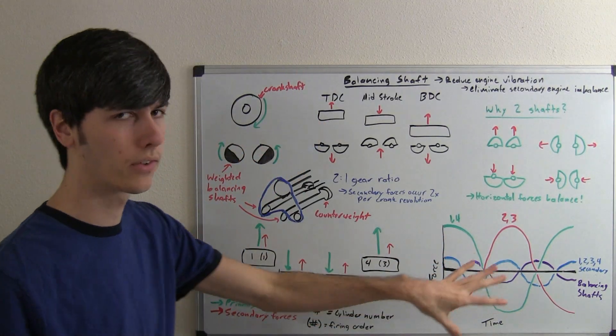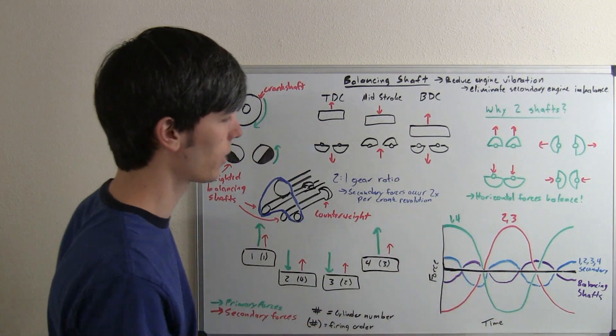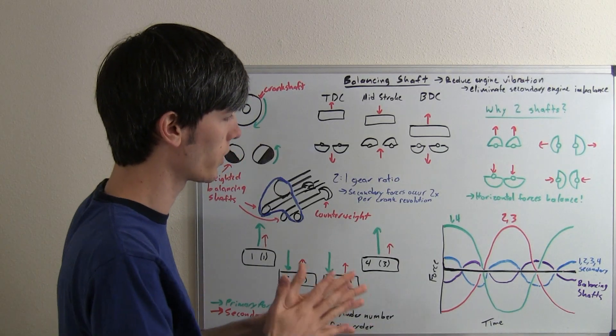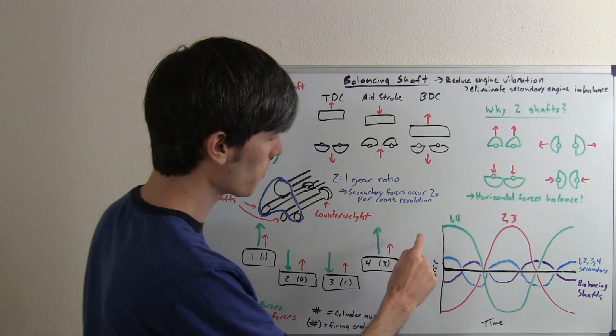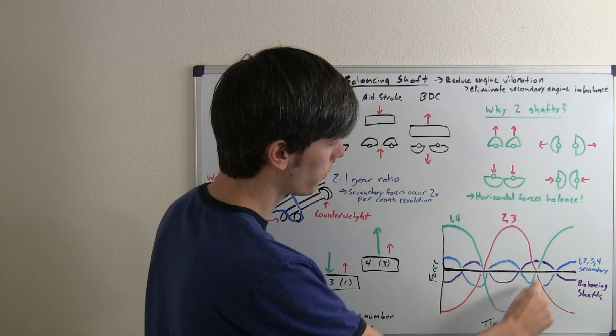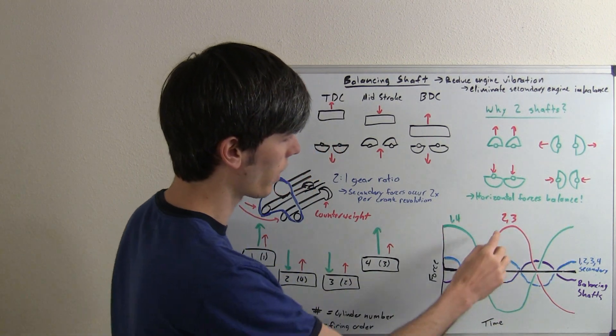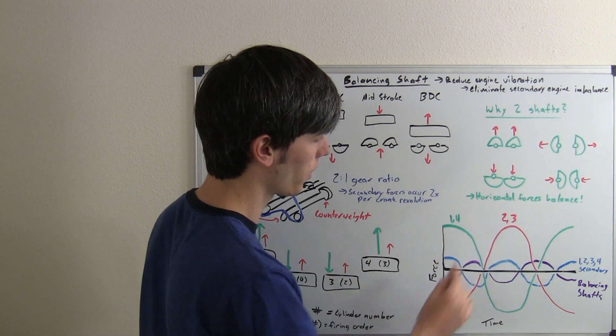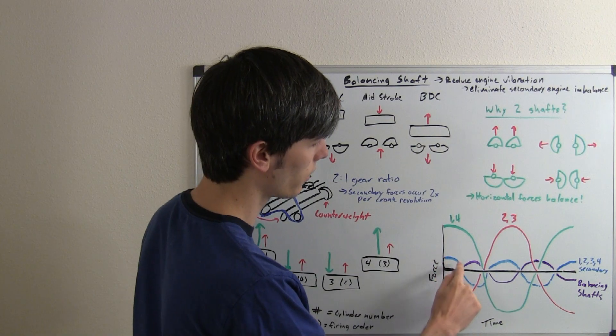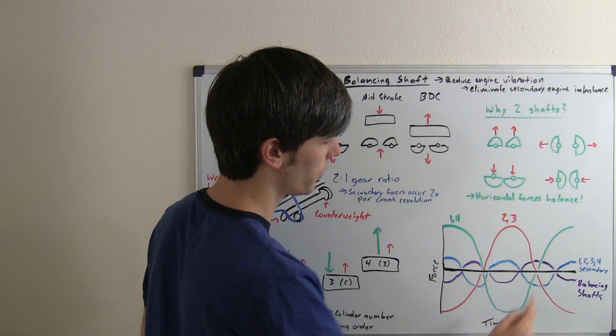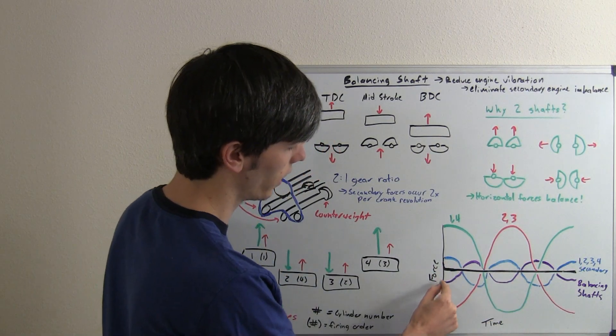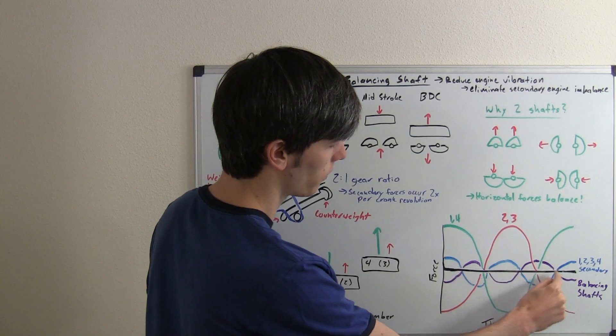What does this look like in the big scheme of things? On this plot, which you've seen if you've been watching the other engine balancing videos, you've got your primary forces of your first and fourth cylinder, your primary forces of your second and third cylinder, and then your secondary forces of all four cylinders. What this balancing shaft does is negate those secondary forces, so you have a nice, very smooth engine without vibrations caused by the secondary forces.